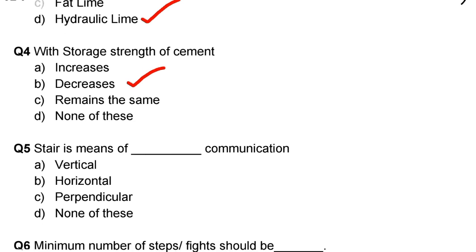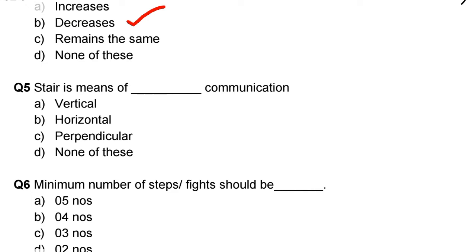Next question: stair is means of blank communication. Option A: vertical communication, Option B: horizontal, Option C: perpendicular, Option D: none of the above. The correct answer is option A, vertical communication.